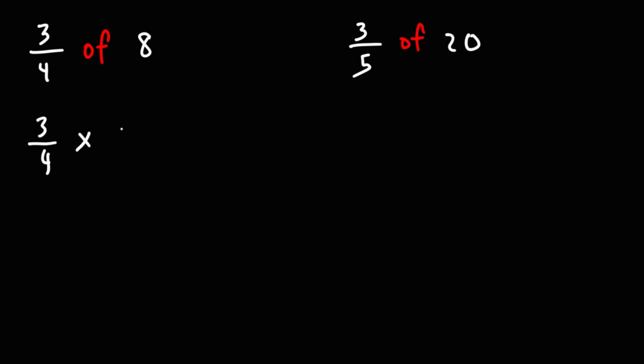To do that we need to write 8 as a fraction so we can simply put it over 1 and multiply across. 3 times 8 is 24, 4 times 1 is 4, and 24 divided by 4 is 6. So the answer is 6.